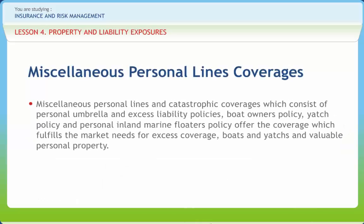Miscellaneous personal lines and catastrophic coverages consist of personal umbrella and excess liability policies, boat owners policy, yacht policy and personal inland marine floaters policy, offering coverage which fulfills the market needs for excess coverage, boats and yachts, and valuable personal property. An umbrella policy provides a secondary coverage beyond the primary coverage. This is an excess policy that kicks in after the primary policy has been exhausted, and the umbrella policy can also be used to cover what is not included in the primary policy.